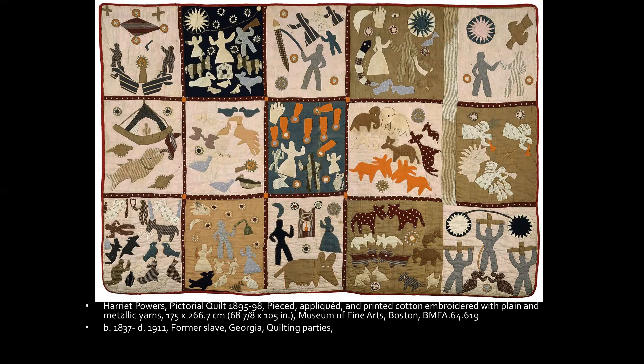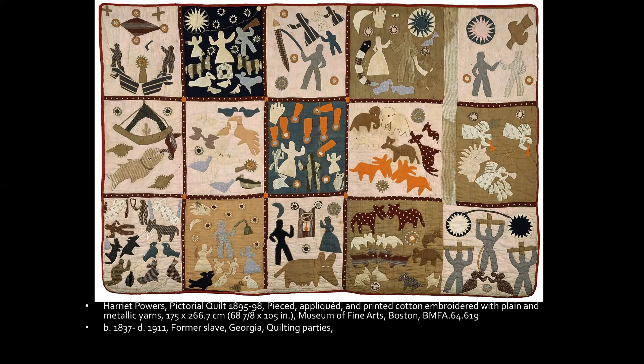Powers was a former slave who lived in Georgia and got into quilting parties — something both Black and white women would do. These kinds of gatherings would mirror what we saw in Africa with secret societies: not necessarily secretive, but a way for women to get together and find support. In this quilt there's a lot of visual imagery that relates to the Bible, but also imagery you may not recognize. Before going to the next slide, pause the video and see if you can find some stories you recognize from the Bible.